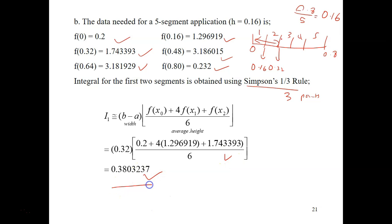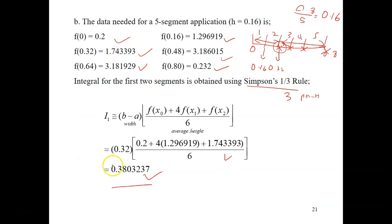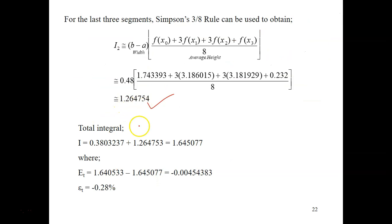After calculating, you get the answer for the first two segments. For the remaining three segments, we use the 3/8 rule. The four points used start from 0.32, 0.48, 0.64, and 0.8. Substitute your values into the 3/8 formula and you get that answer. The total integral is the sum of both parts, adding the first result plus 1.264754, giving the final answer. Comparing with the true value, it is really, really close — the true error is 2.8%.